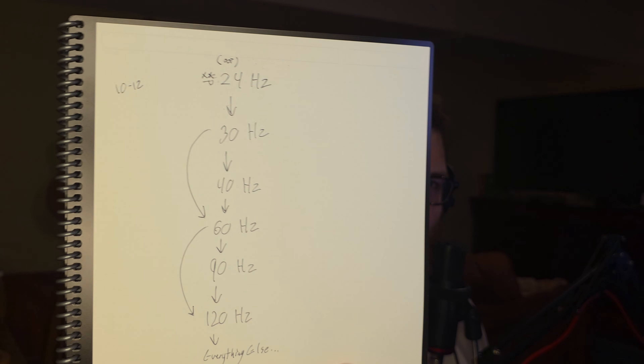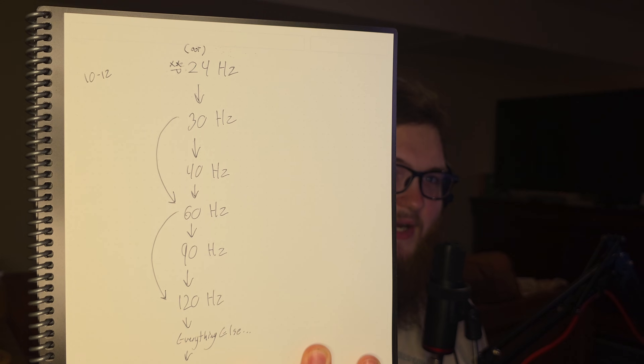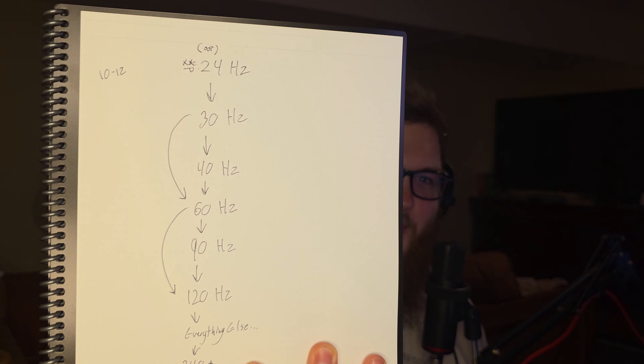First, look at this handy-dandy chart. We're going to start all the way up at the top at 24 hertz. This is used for content — I'm currently recording at 30, but a lot of movies you watch, a lot of videos, a lot of animations are done in 24 frames per second because it's where things just start to look natural. With natural motion blur and animation techniques, it just looks right. But when we're talking gaming, there's a different story to be told.